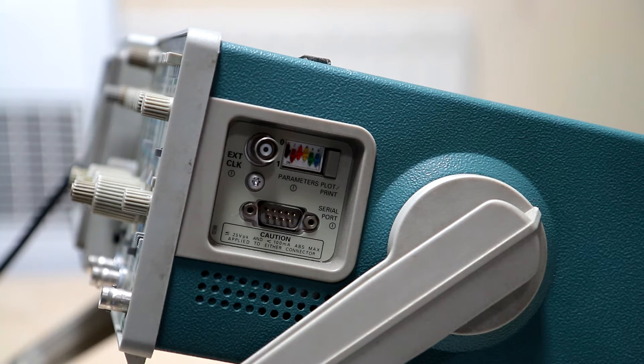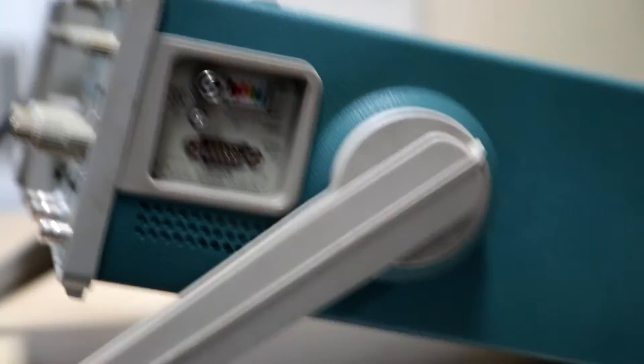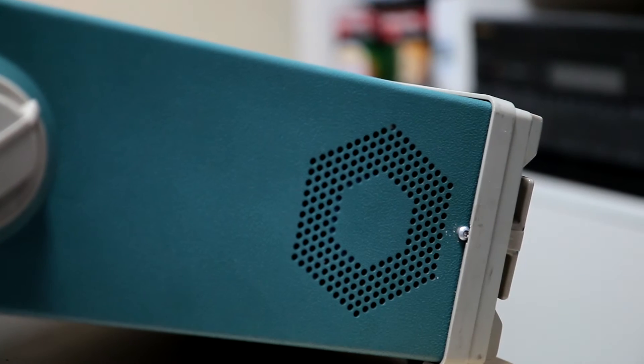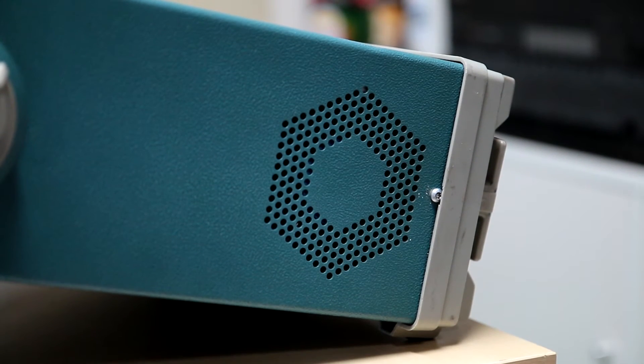On the side of the unit there's the connection for a printer along with some dip switches for the various configurations and an input for an external frequency reference. Also you've got the tilting bail attachment.